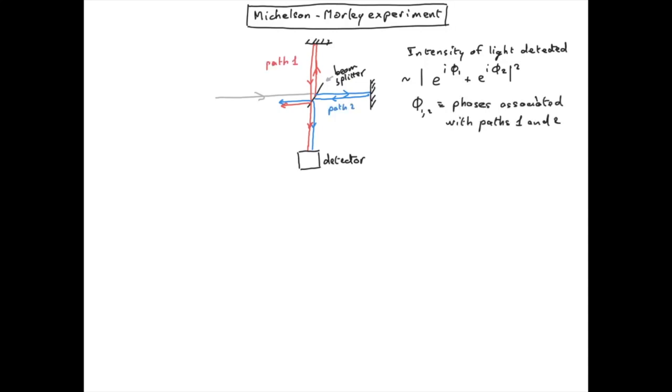Of course, if the length between the mirror and the beam splitter is the same for both paths and if the light rays are exactly parallel, then both phases will be the same and we will have constructive interference.